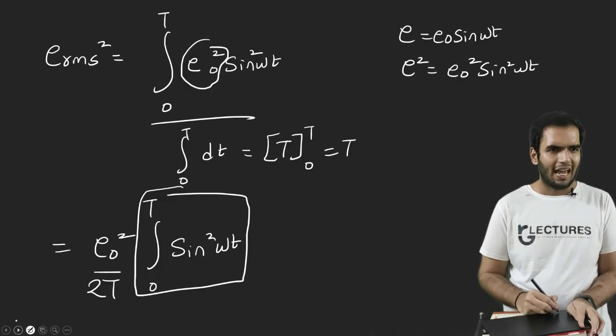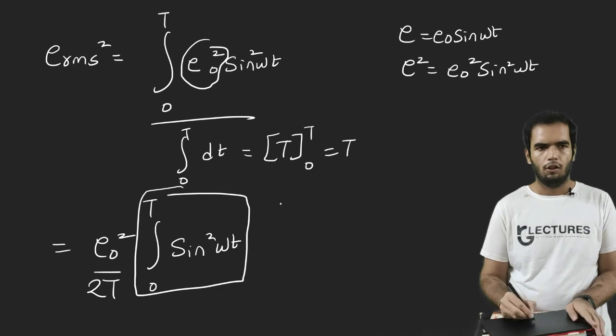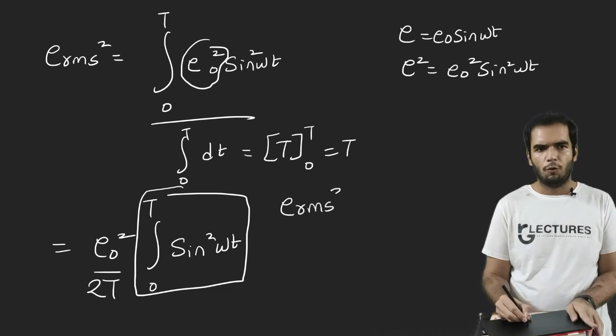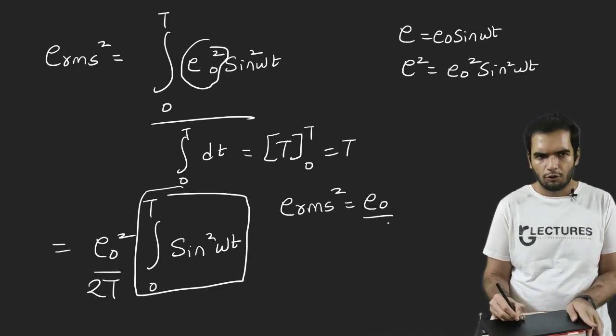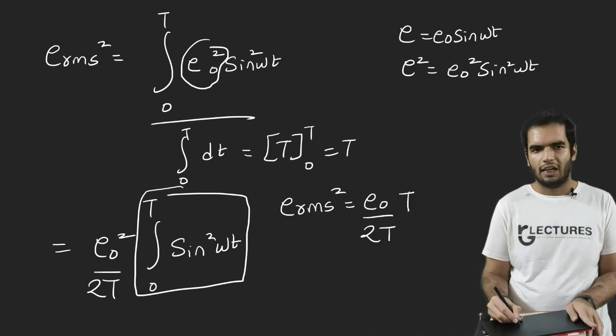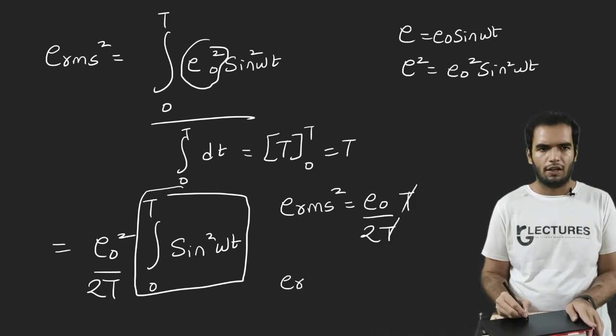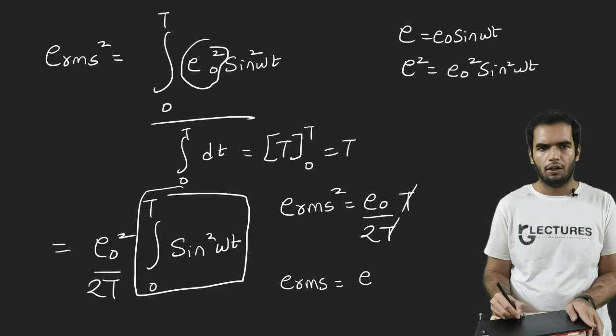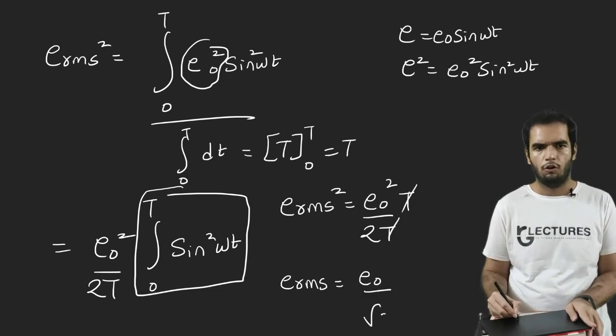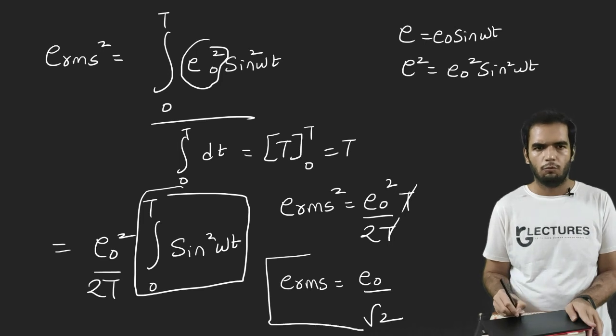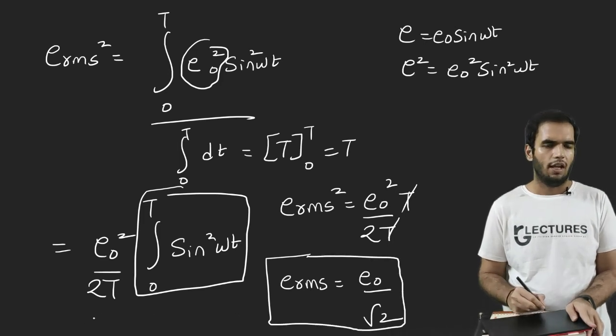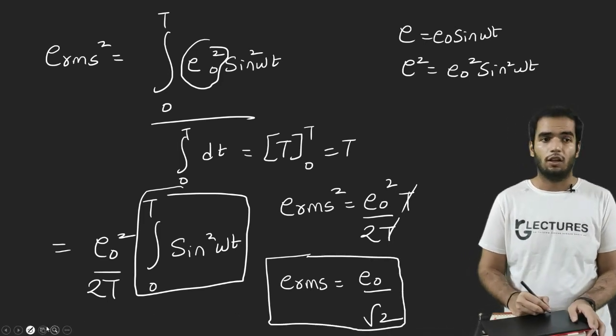And what I already had was this term. So basically, E_RMS square is equivalent to E0 square by two T. And again, T gets cancelled. So finally, I have E_RMS is equivalent to here. I had square E naught upon root two. And that is what we had to reach at this point. And finally, we can do the same for the current also.